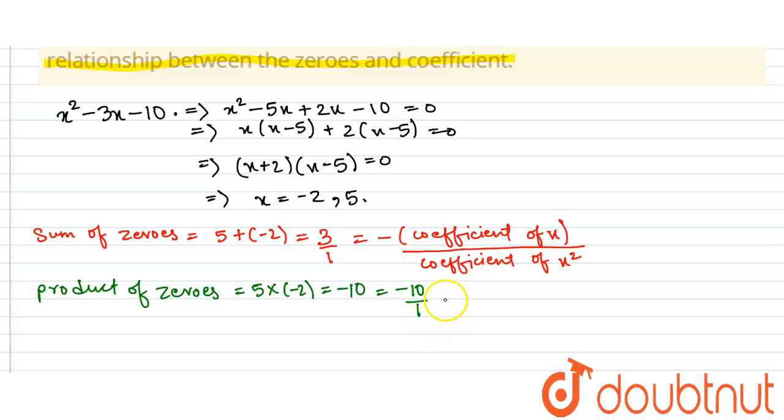Now in the quadratic equation, the constant term was minus 10. So this is equal to the constant coefficient or term by coefficient of x².